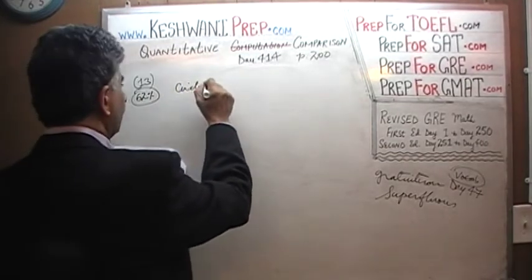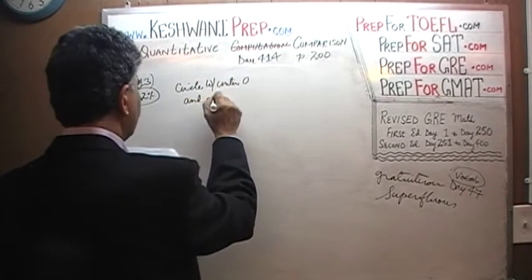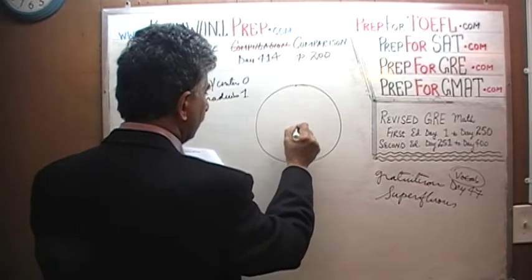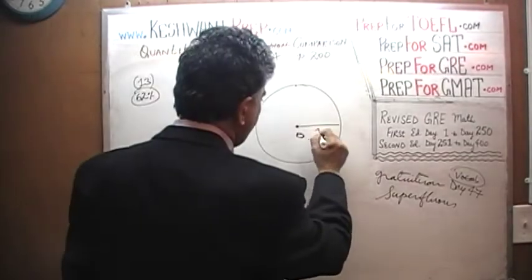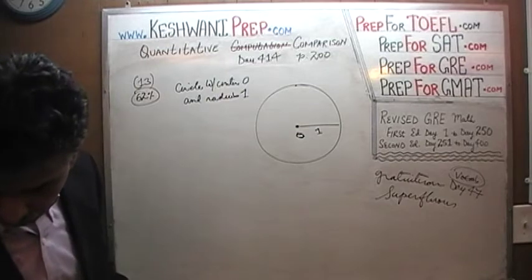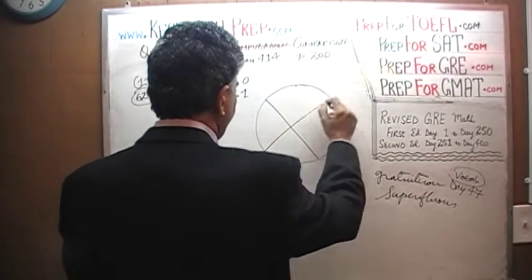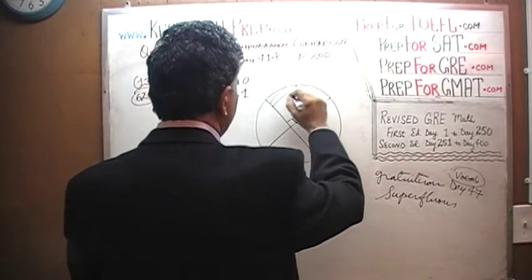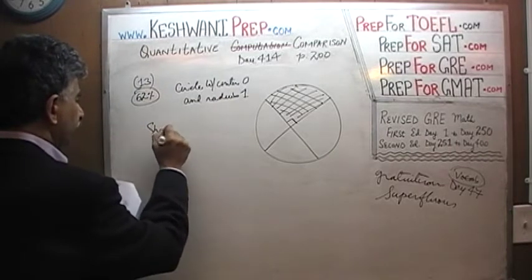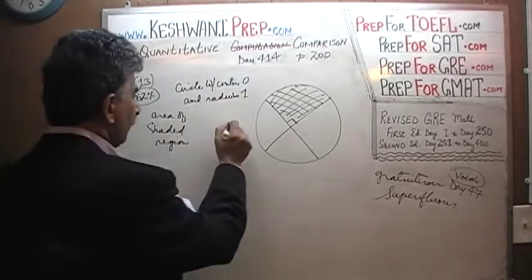We are told that we have a circle with center O and radius 1. Here is our circle, here is center O, and we are told that it has a radius of 1. They go on to show us the shaded region — I should draw the shaded region exactly the way it appears. It appears something like this, and they tell us that this angle is 90 degrees. This is the shaded region, and they want us to compare the area of the shaded region in column A versus pi over 2.